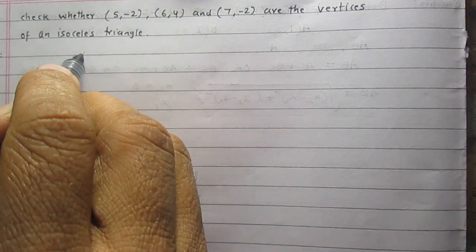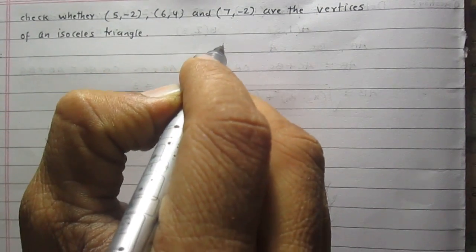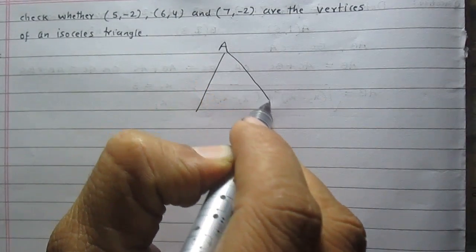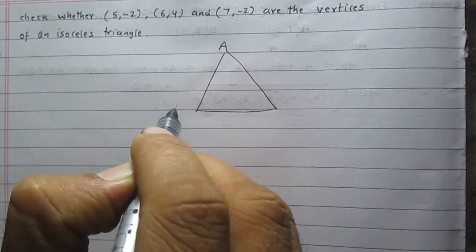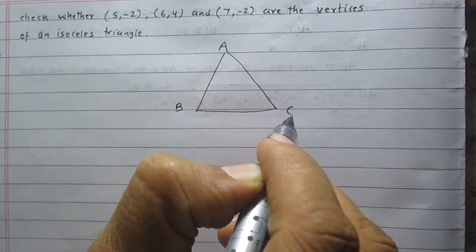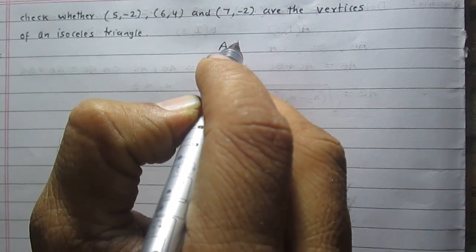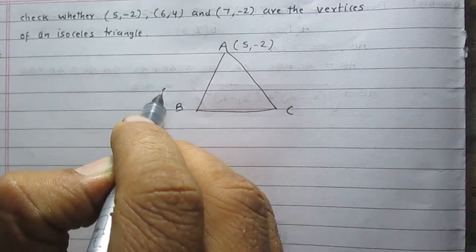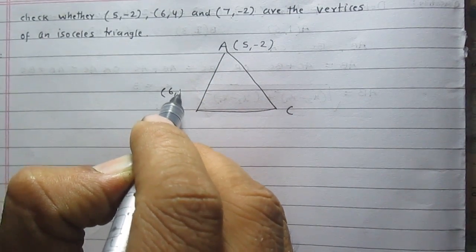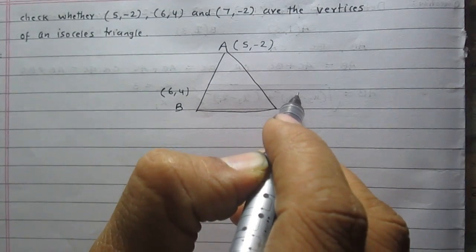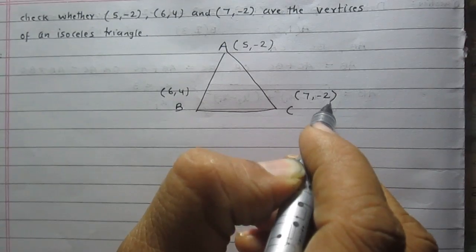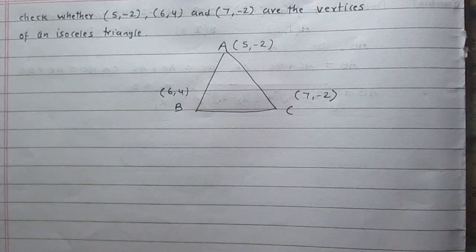Let us consider these three points as point A, point B, and point C. The coordinates of point A are (5, -2), coordinates of point B are (6, 4), and coordinates of point C are (7, -2). We are to check whether triangle ABC is isosceles or not.